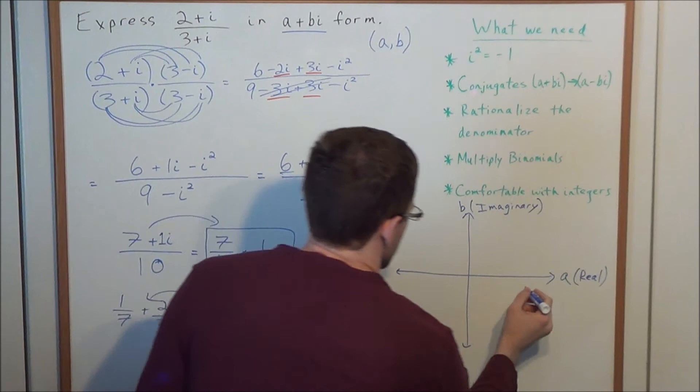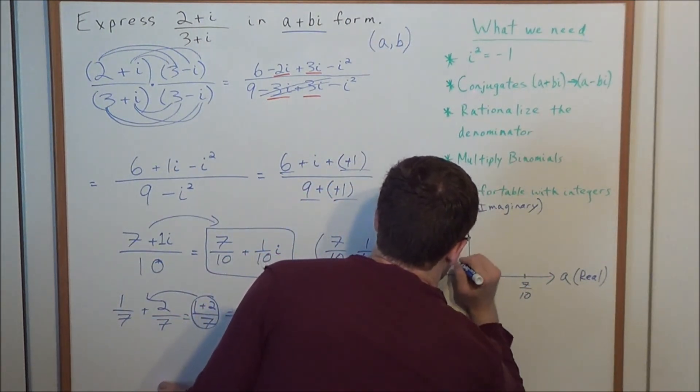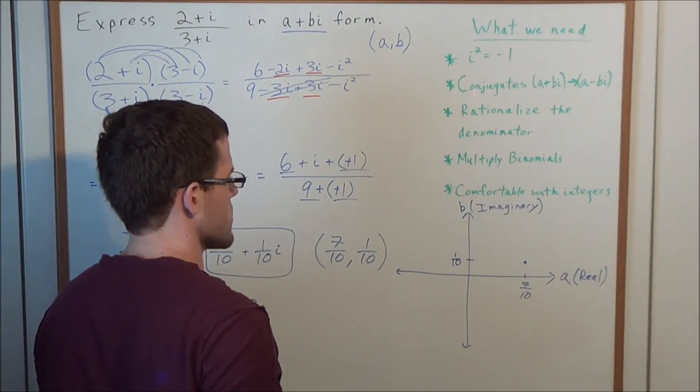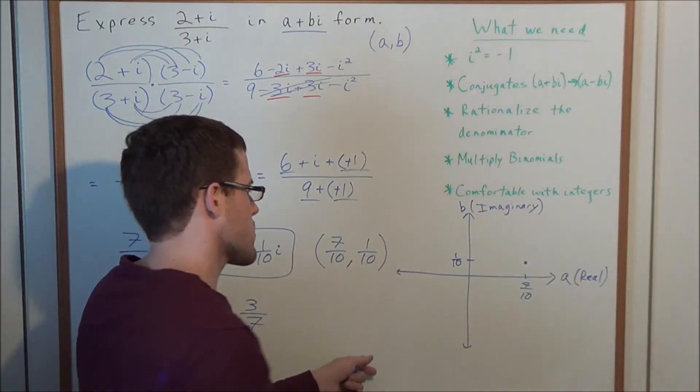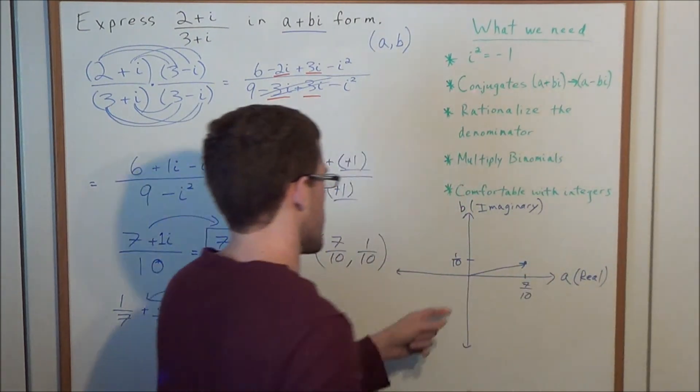So then if we were to graph 7 over 10, we'll say that this is 7 over 10, and this is 1 over 10, we would graph it somewhere over here like this. And then later on when you learn about vectors, you'll be able to look at this as a vector value.